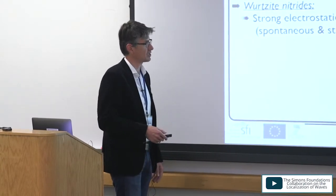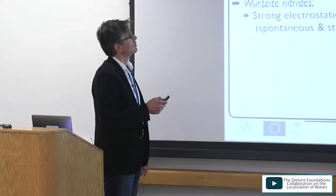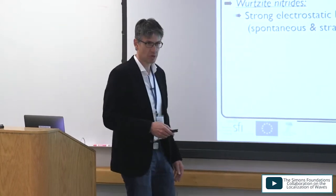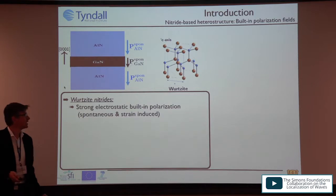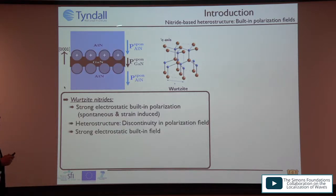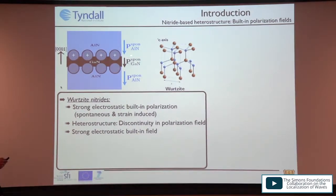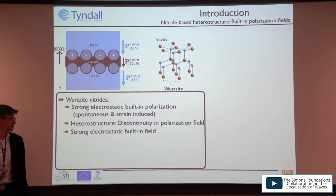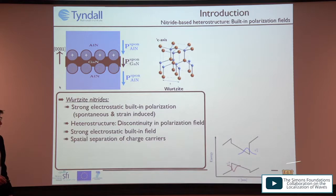While in indium arsenide and gallium arsenide we have a zinc blende system, here we deal with a wurtzite structure, which allows for spontaneous polarization. We have a piezoelectric effect which is strain-induced, but we also have a spontaneous polarization contribution. In a simple gallium nitride well embedded in aluminum nitride grown along the [0001] direction, the spontaneous polarization creates interface charges due to discontinuity in the polarization vector field, leading to a very strong electrostatic built-in field and spatial separation between electron and hole wave functions, which limits radiative properties.